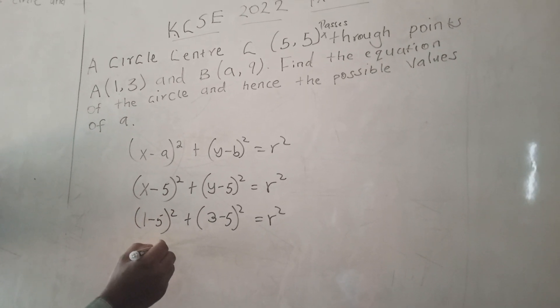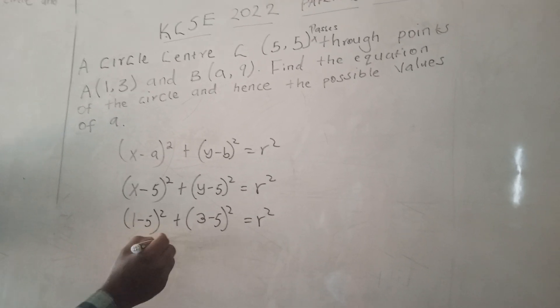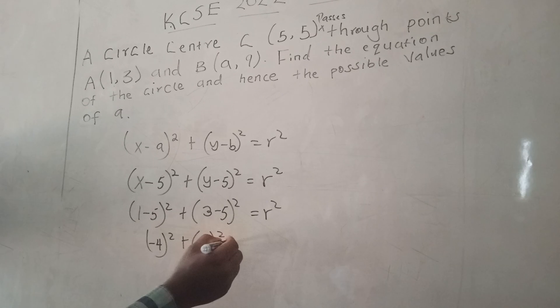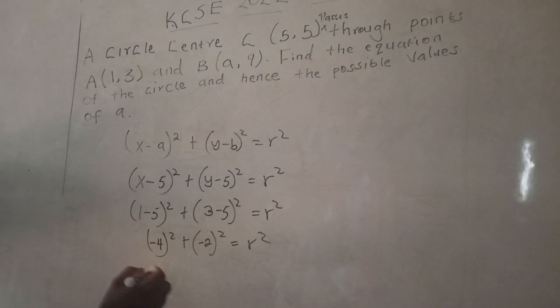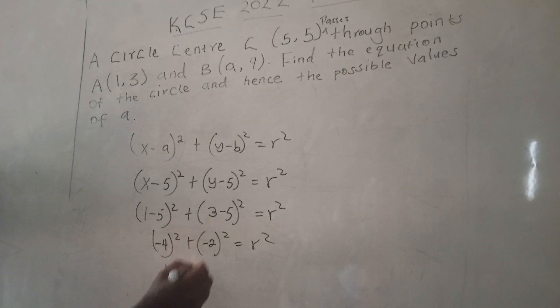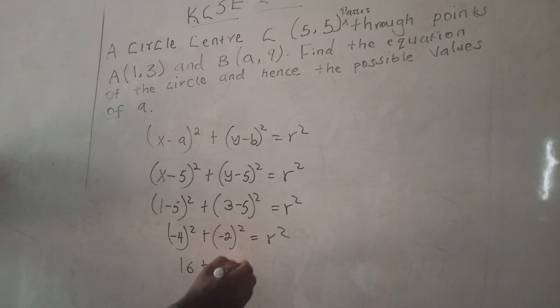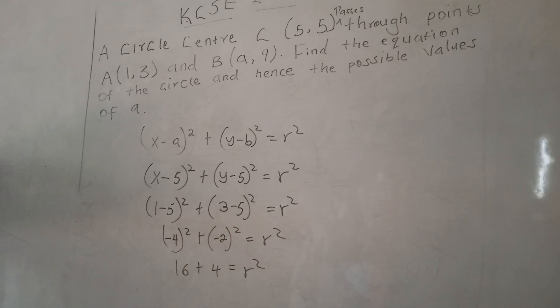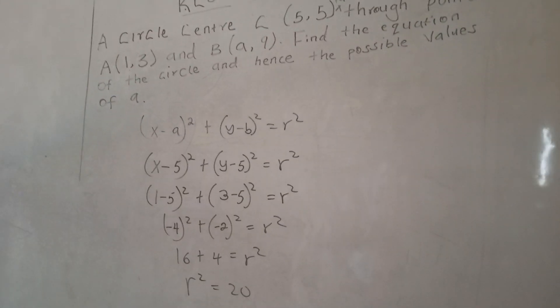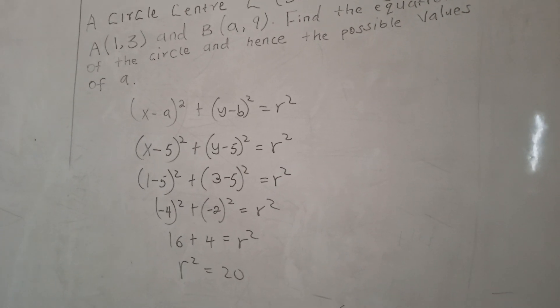Once we have this, we are going to subtract: (1-5)² + (3-5)² = r². This is (-4)² + (-2)² = r². This is going to be 16 + 4 = r². So r² is actually 20.